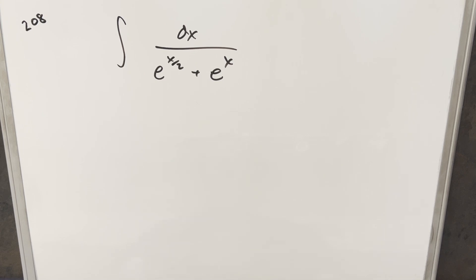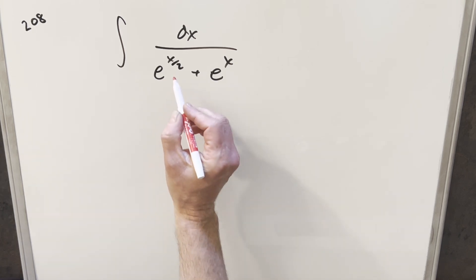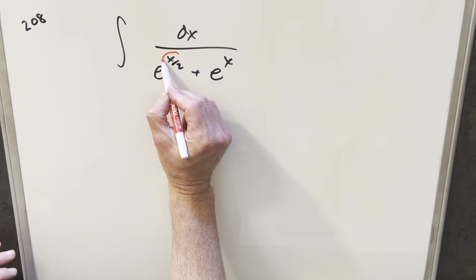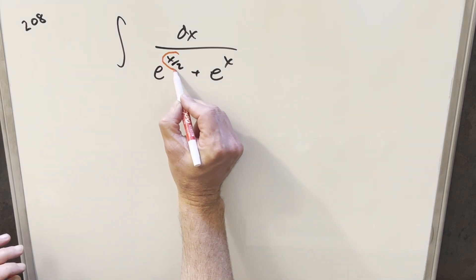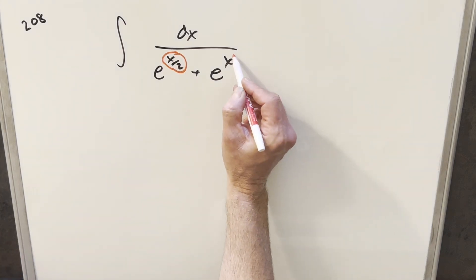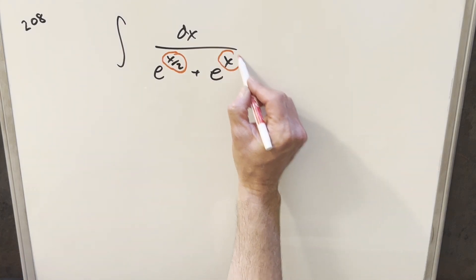We have here an interesting integral from the University of Maths Society number 208. We've got the integral of 1 over e to the x over 2 plus e to the x dx. The interesting problem here is just with the exponent — the fact that we don't have the same exponent in both places. We've got x over 2 here and we've got x here.